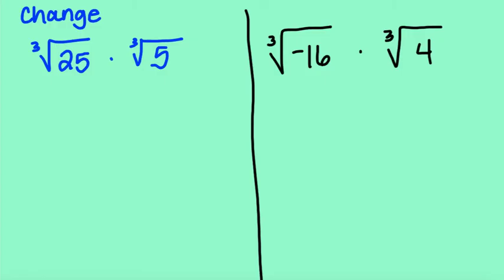I want you to change number 3. I want you to change it to the cubed root of 25 times the cubed root of 5. Okay, so go ahead and change that. So now the indexes are the same, so we can multiply them. The numbers are a little bit bigger, and when we multiply them, look what happens. We get the cubed root of 25 times 5, which is 125. And we know that 5 cubed is 125, so the cubed root of 125 is 5.